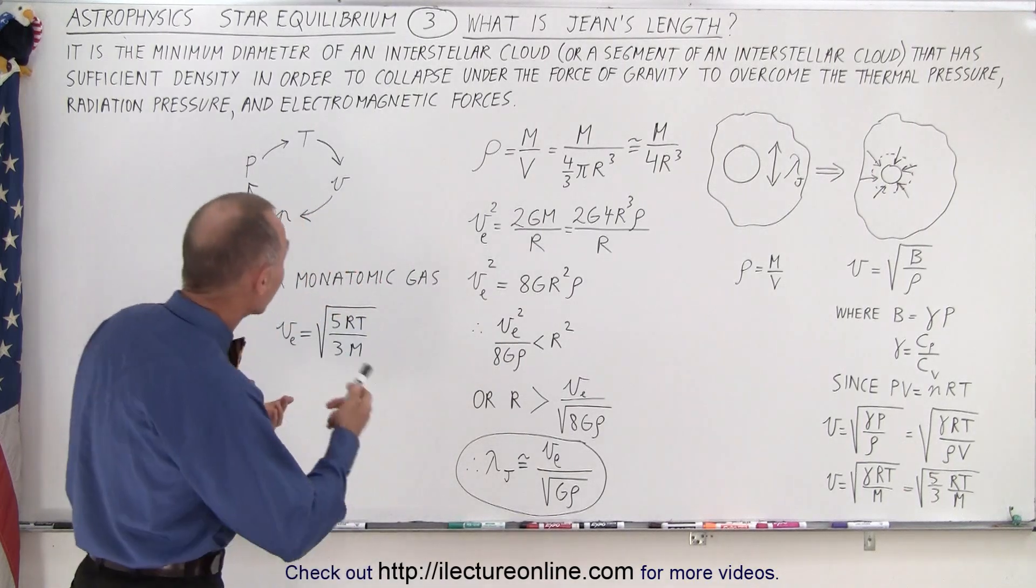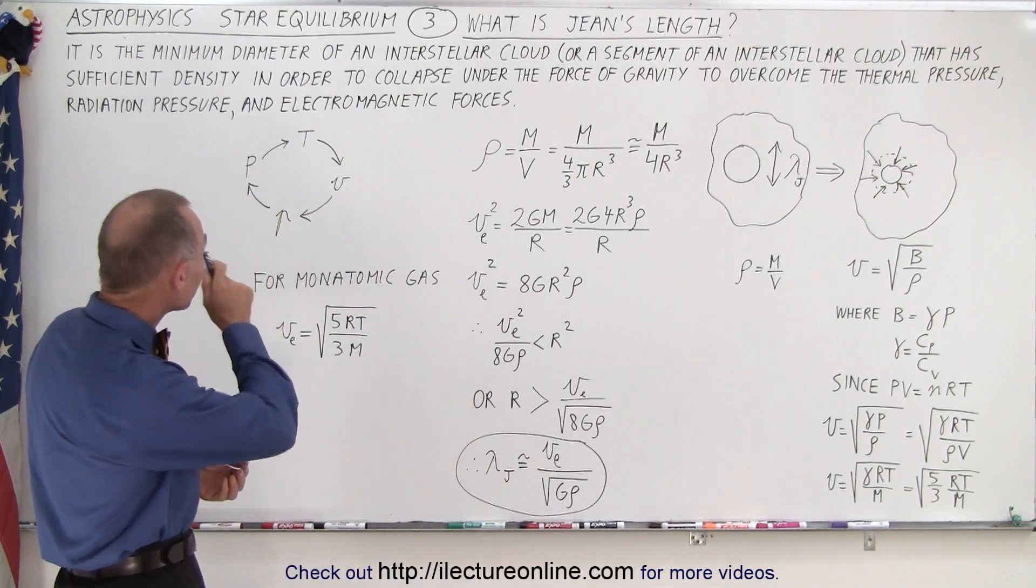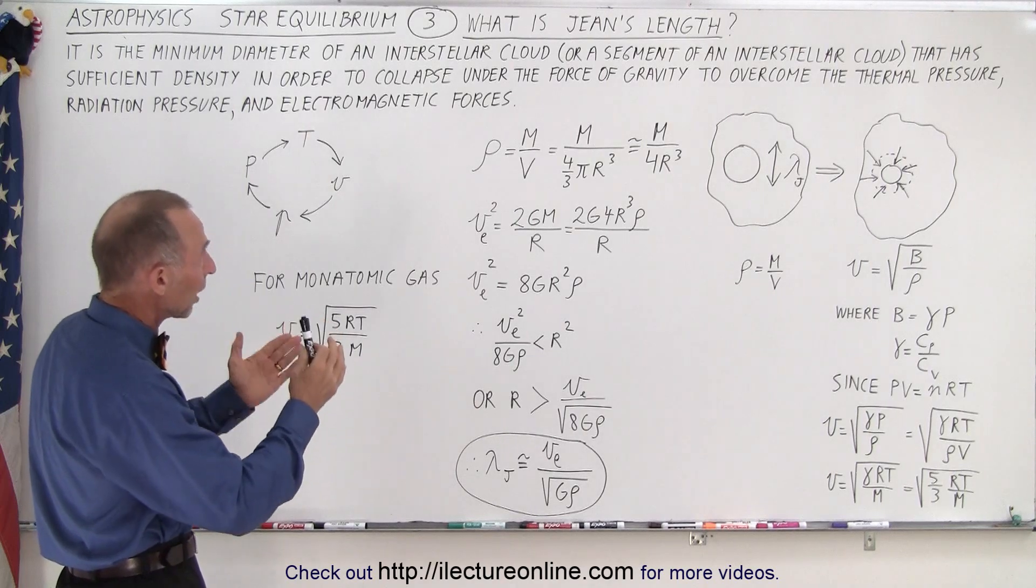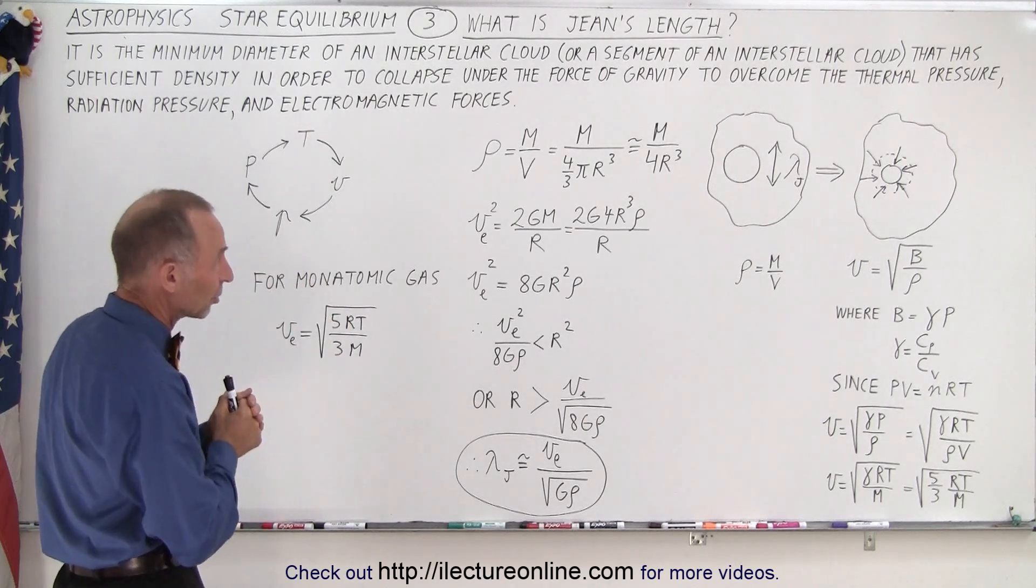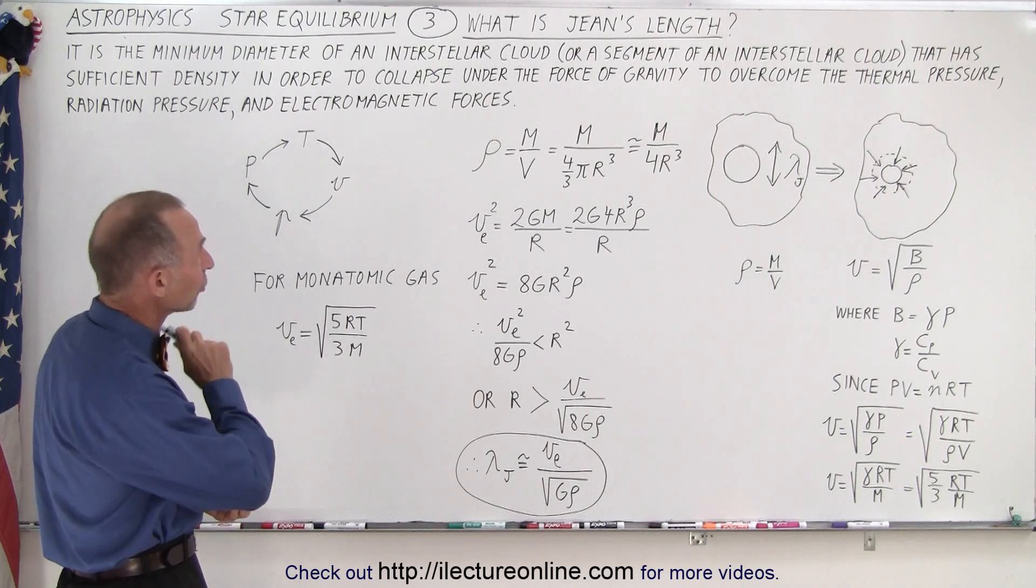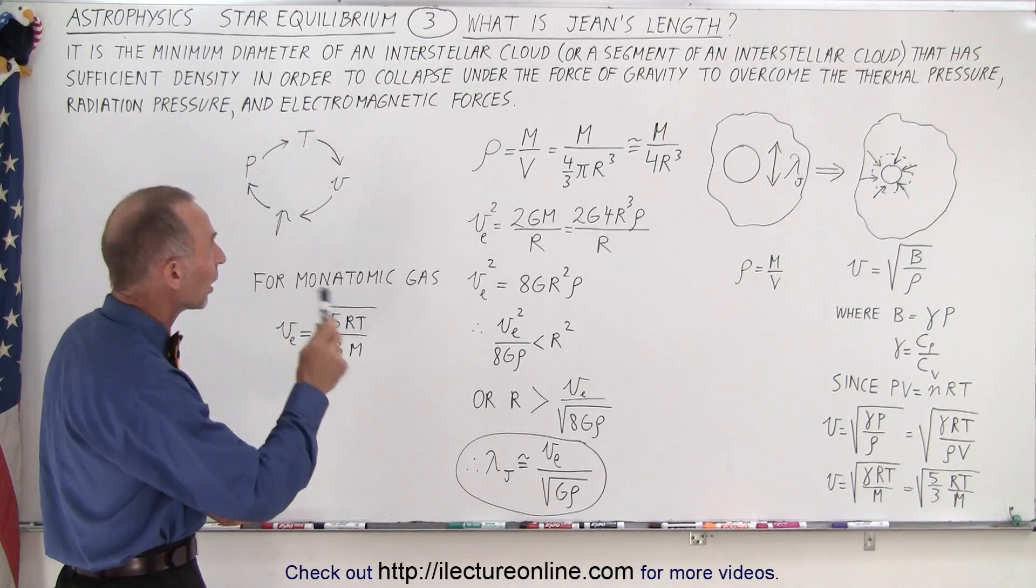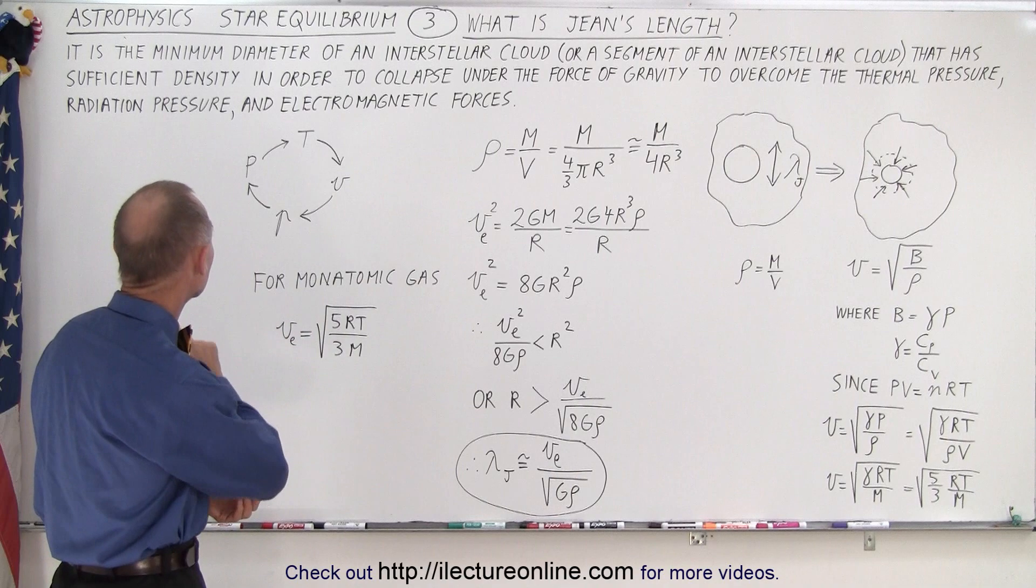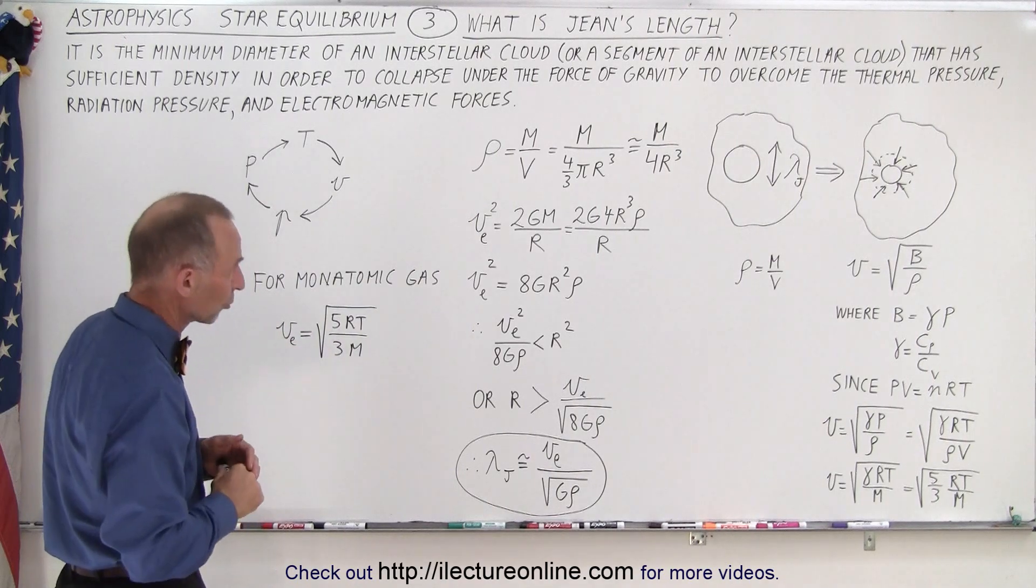So the definition could be written as follows: it is the minimum diameter of an interstellar cloud or a segment of the interstellar cloud that has sufficient density in order to collapse under the force of gravity to overcome the thermal pressure, the radiation pressure, and the electromagnetic forces.